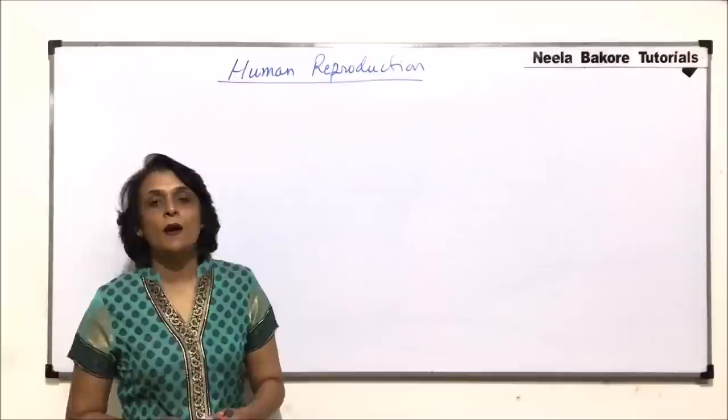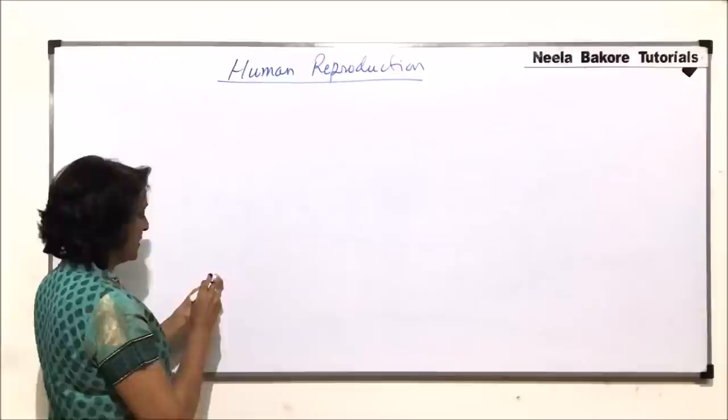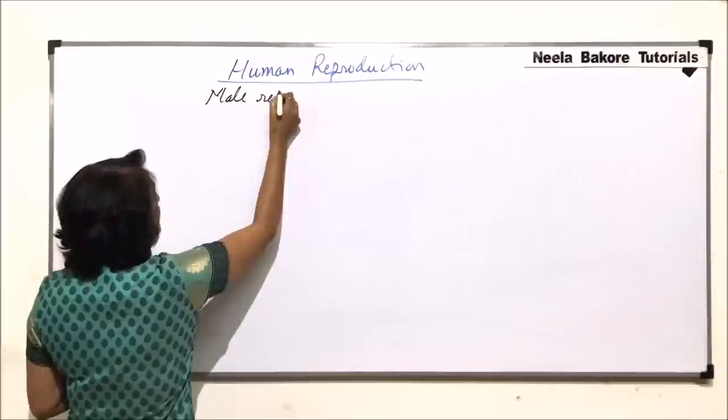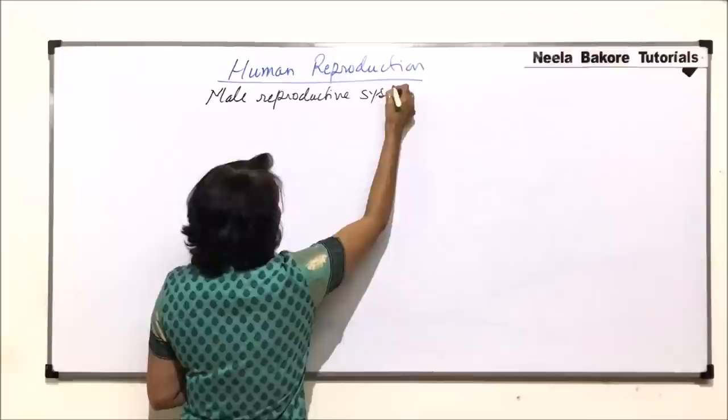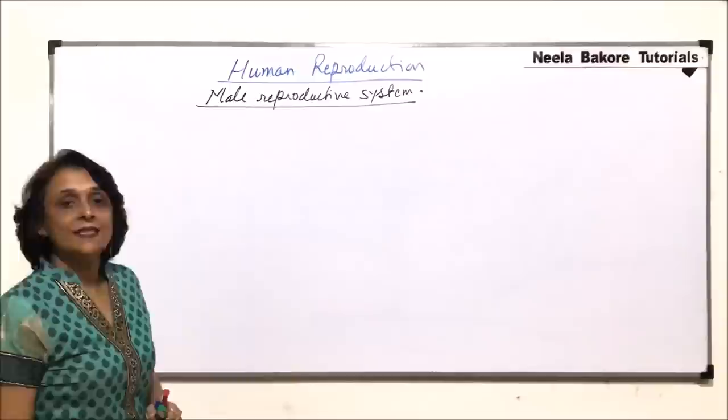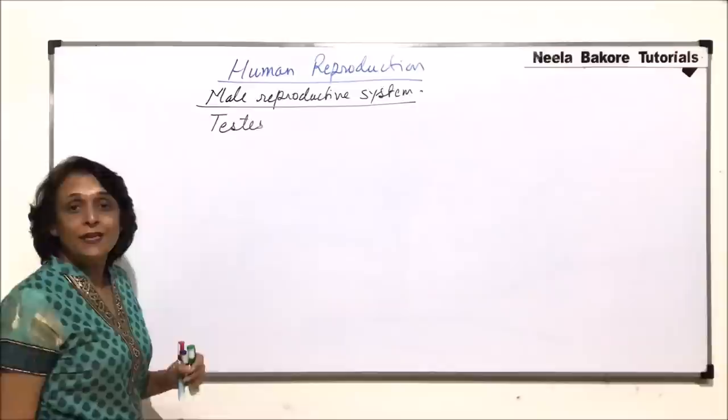In this part, we will start with the Male Reproductive System. The Male Reproductive System comprises of the primary sex organ, that is, a pair of testes. So, there are two in number. This is the primary sex organ.